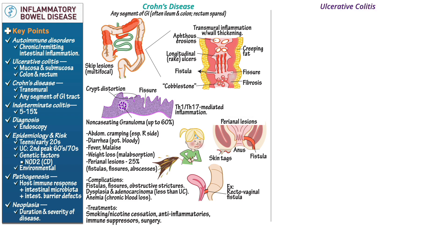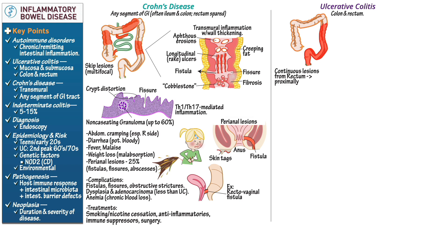Next, let's learn about ulcerative colitis. Indicate that it primarily targets the colon and rectum and is characterized by continuous lesions — in contrast to Crohn's, which typically spares the rectum and causes patchy inflammation, or skip lesions. Draw a portion of the GI tract in cross-section to show the mucosal and submucosal inflammation. Recall that in Crohn's disease, inflammation is transmural.